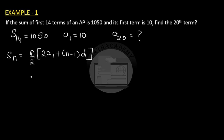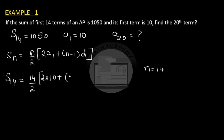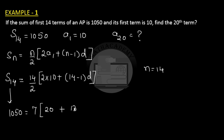When we compute S(14), the number of terms is 14. Substituting into the formula we get: 14/2 × (2×10 + (14−1)×D). Since S(14) = 1050, we have 1050 = 7 × (20 + 13D).